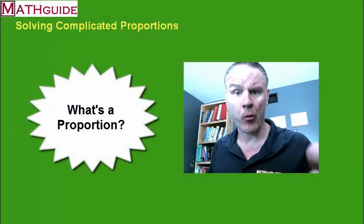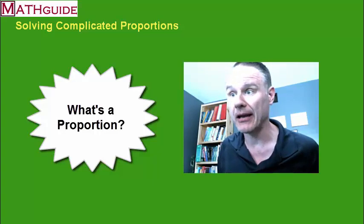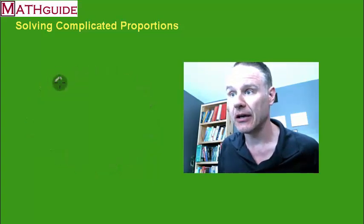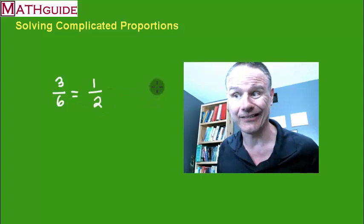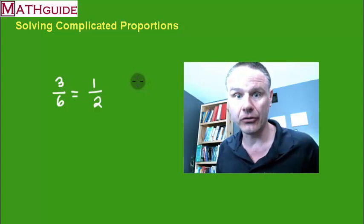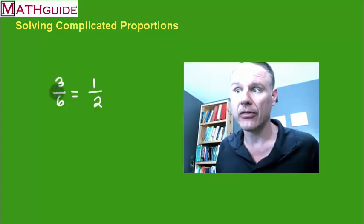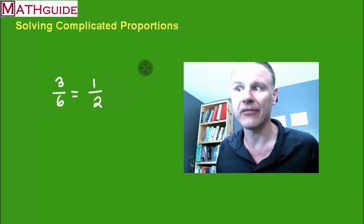So let's talk about what a proportion is. Let's use an example that may be simple to understand. Let's take for instance the fraction 3 sixths. If I reduce this, if I divide the top by 3 I get 1. If I divide the bottom by 3 I get 2. These two fractions are identical, so therefore I can put an equal sign between them. 3 divided by 6 is 0.5. 1 divided by 2 is 0.5. They're equal in value.